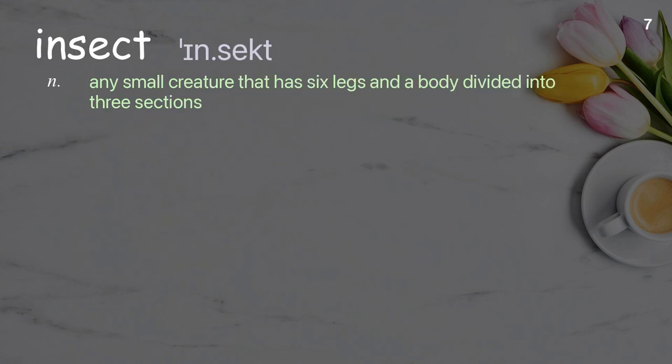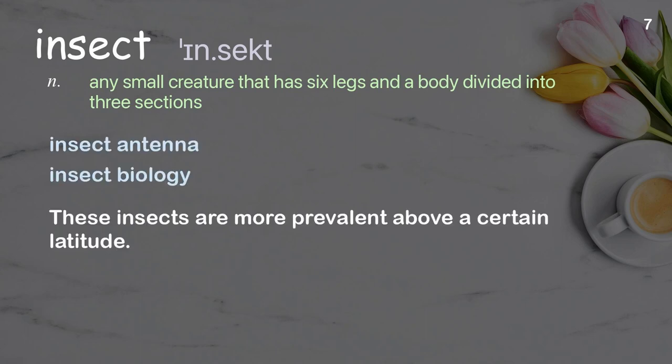Insect. Any small creature that has six legs and a body divided into three sections. Examples: insect antenna, insect biology. These insects are more prevalent above a certain latitude.